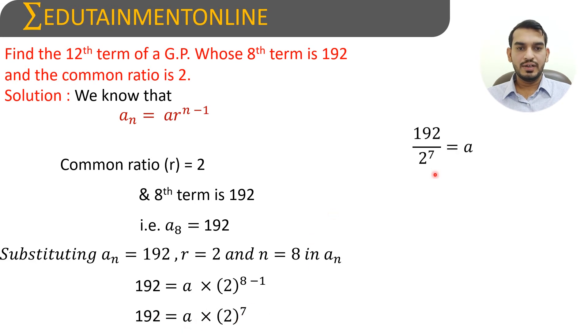So a equals 192 divided by 2 power 7. So now we need to find the 12th term of the series which equals a into r power 12 minus 1.